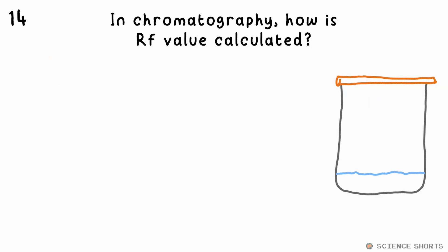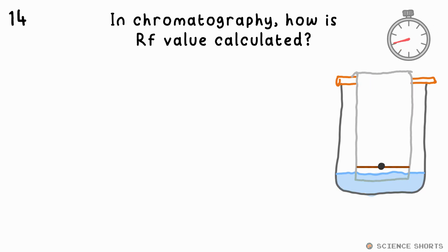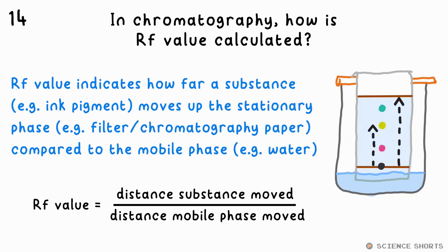Question 14. In chromatography, how is RF value calculated? RF, or retention factor, is the ratio of how far the substance — for example, an ink pigment — has moved up the stationary phase, say filter or chromatography paper, compared to how far the mobile phase, for example water, has moved. These are measured from where the substance started, which is why we draw the baseline in pencil — it doesn't move with the mobile phase.